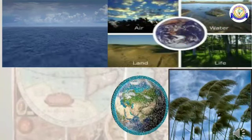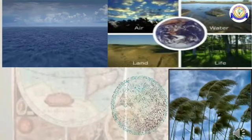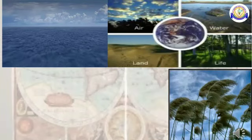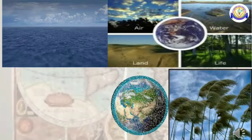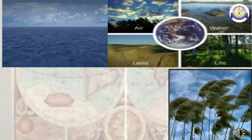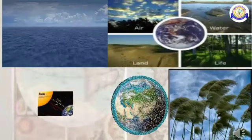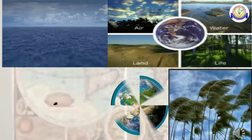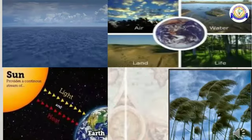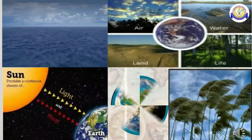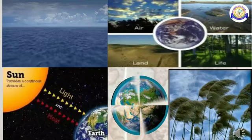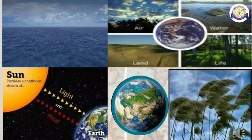Some of the things that make life possible on Earth are water, which is found on the surface of the Earth, the layer of air that surrounds the Earth, and the heat and light that we get from the sun. No life is possible without water, air, heat and light. That is why Earth is different from the other planets.